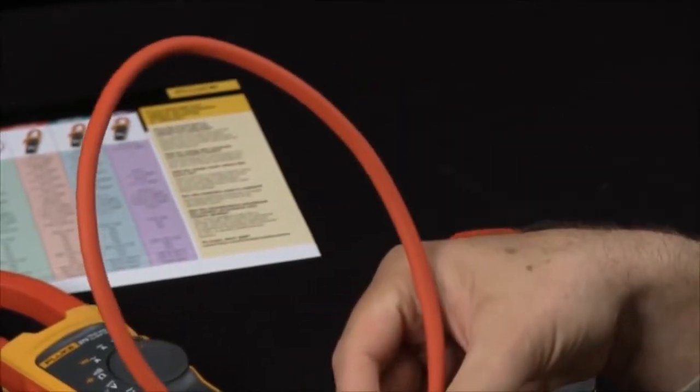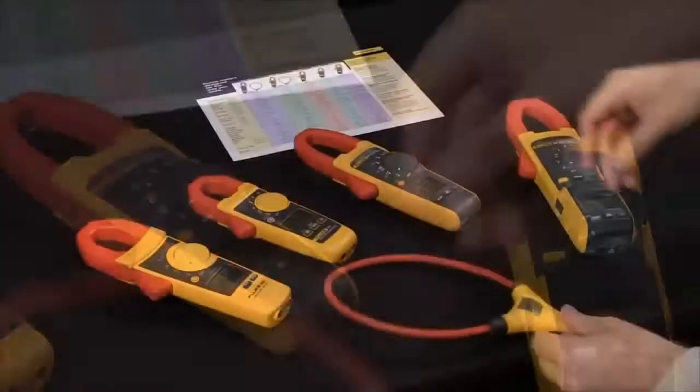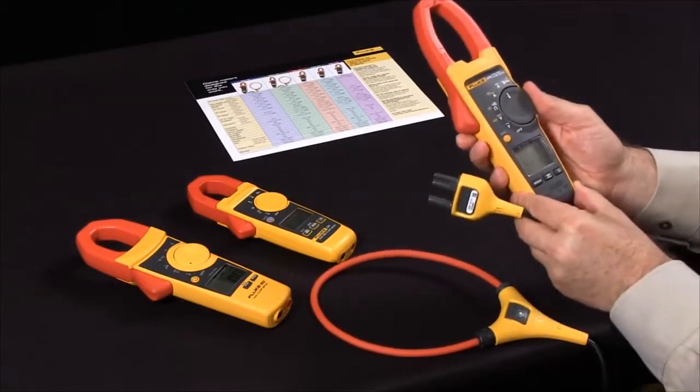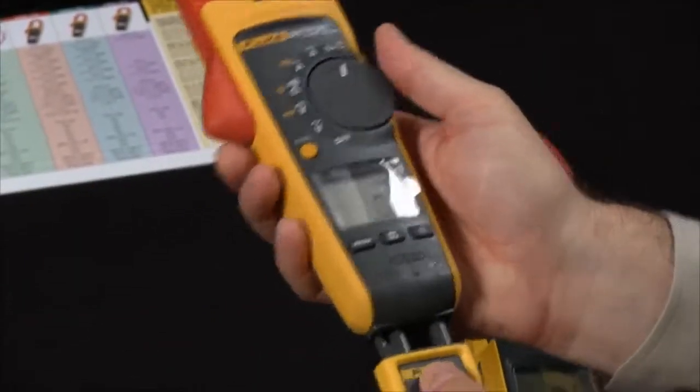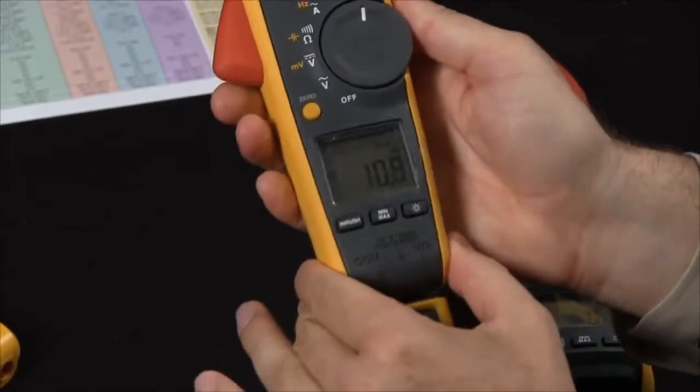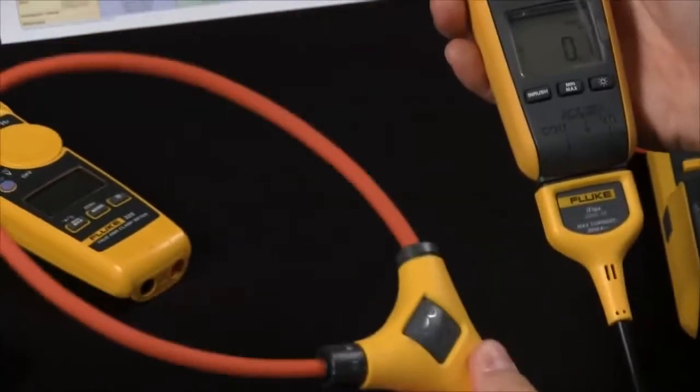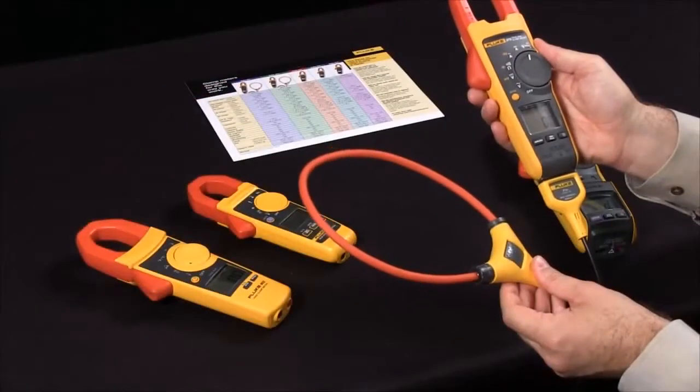The iFlex will work with any of our new generation clamp meters. Simply set the meter to iFlex, insert it into the bottom of the meter, and now you're able to measure up to 2500 amps AC with our iFlex accessory.